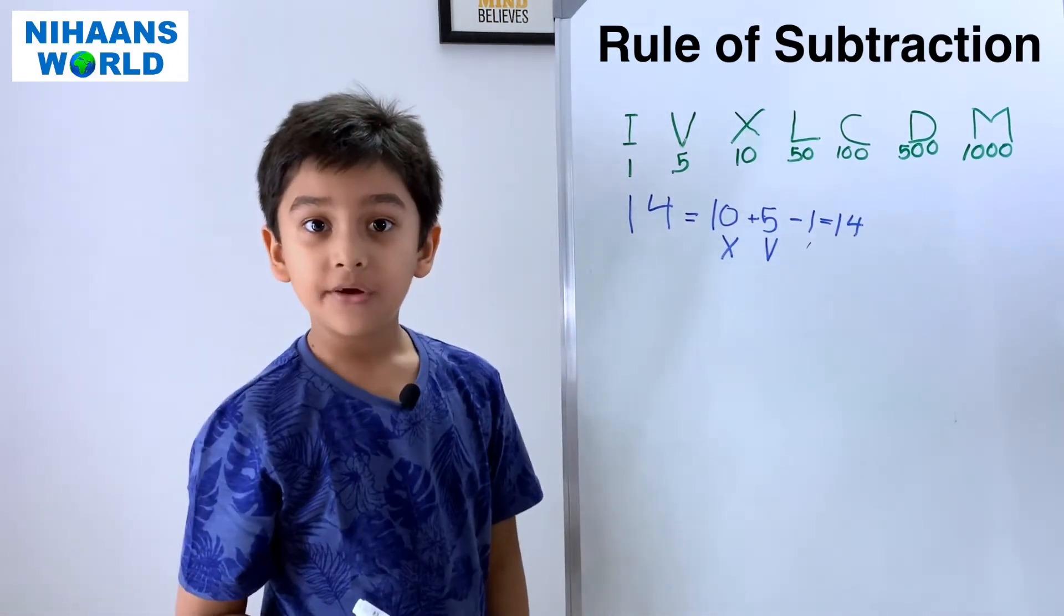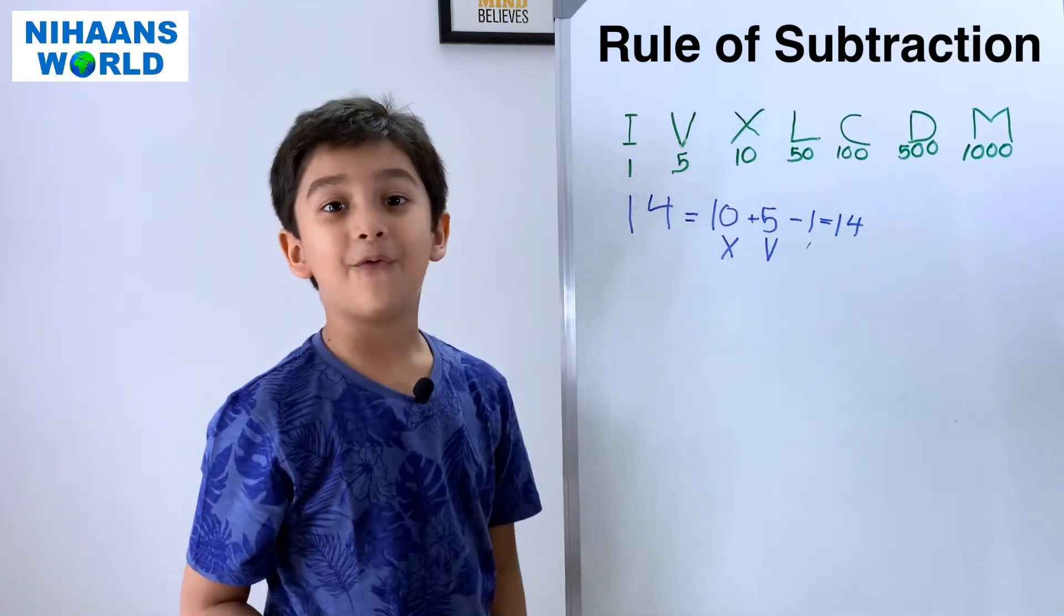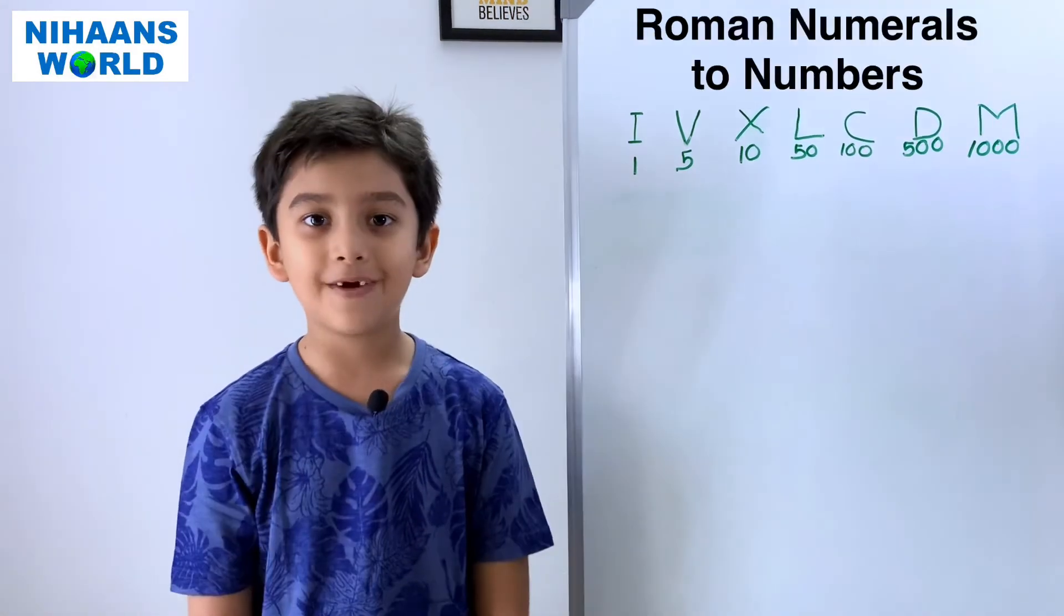One doesn't come here. Then addition will come. So, we need to do subtraction, right? So, one will come before V.